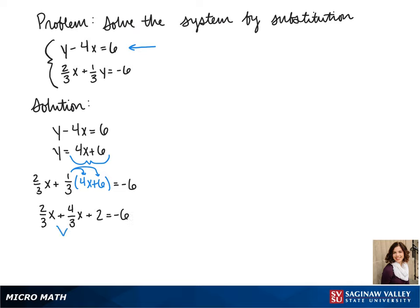We combine our like terms and subtract 2 to the other side. This gives us 6/3x equals negative 8. 6/3 simplifies to 2, so 2x equals negative 8. We divide both sides by 2, and x equals negative 4.